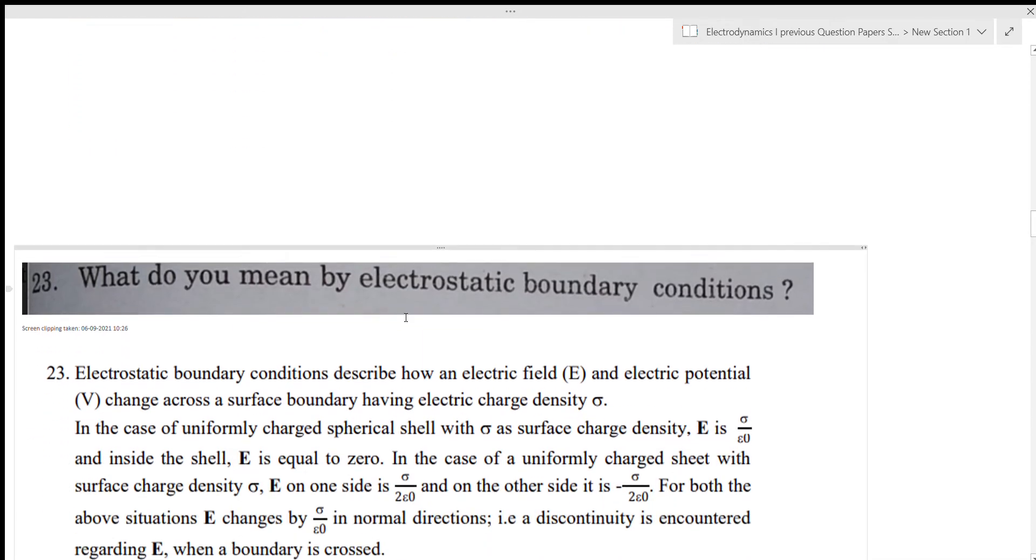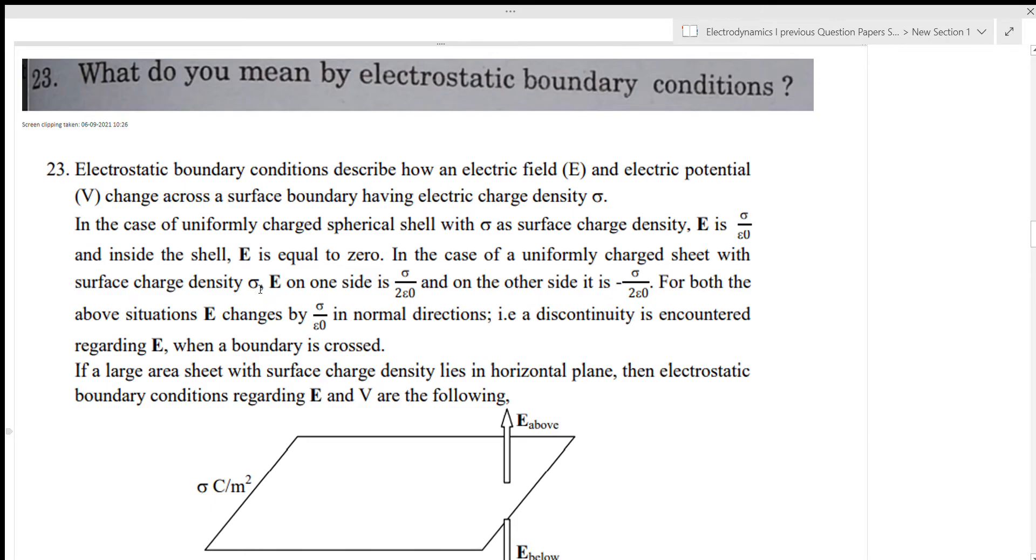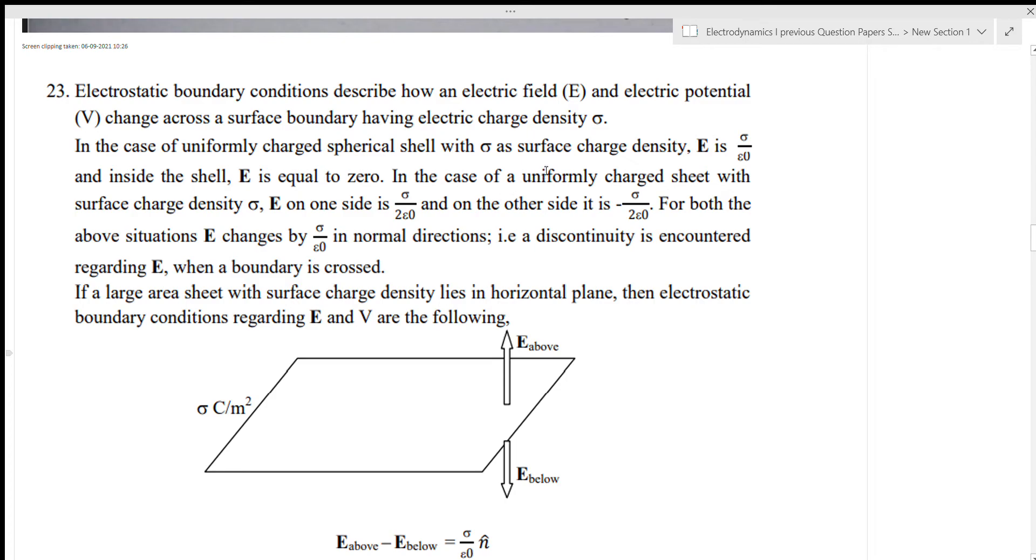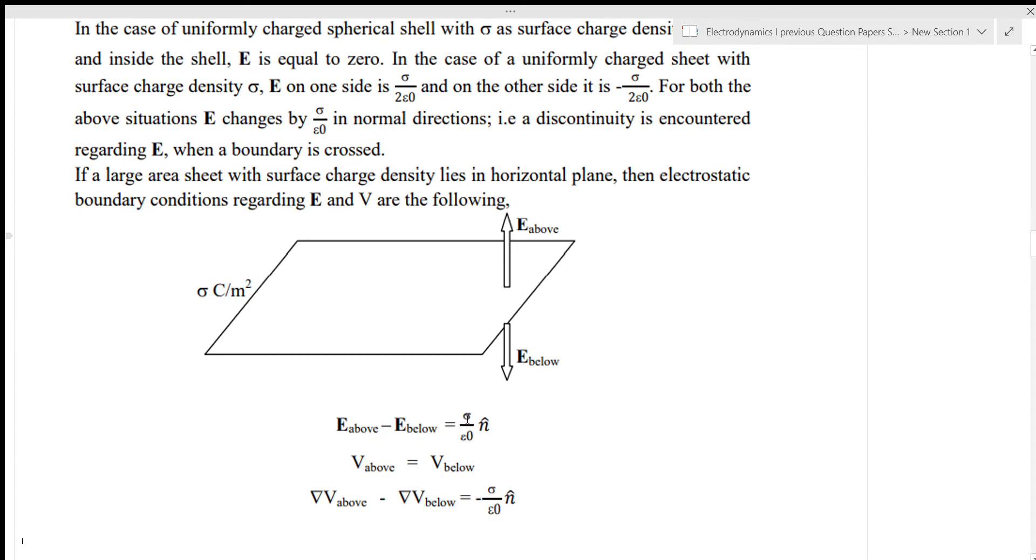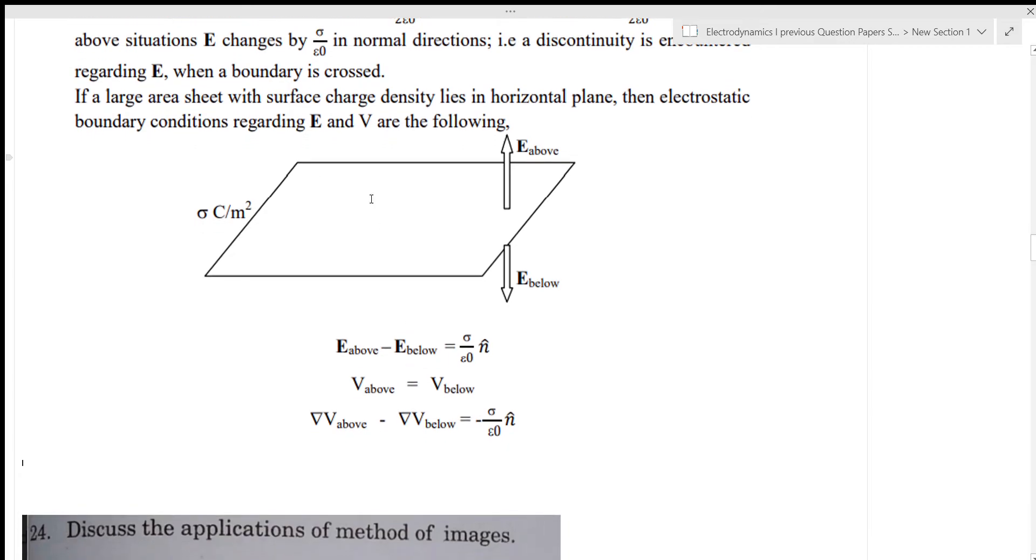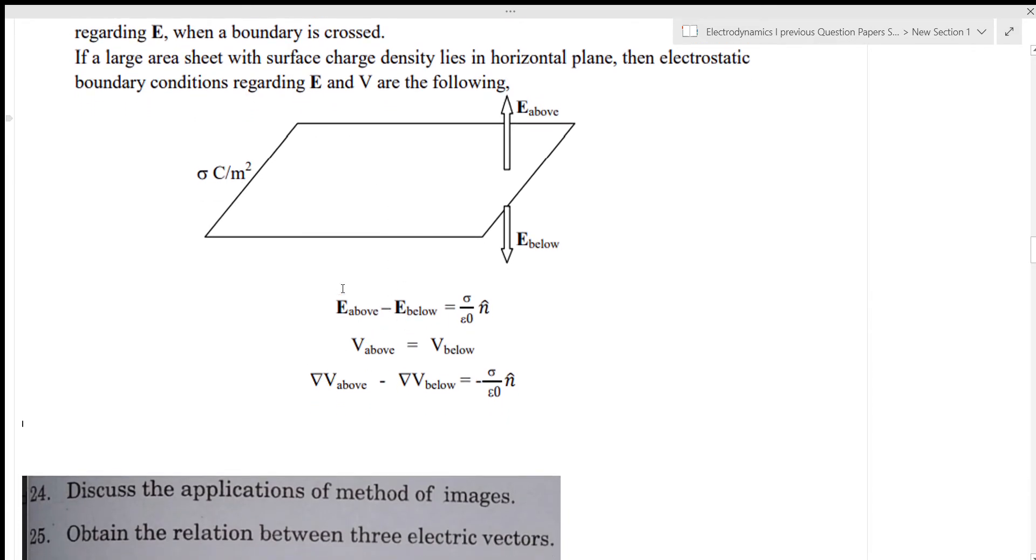What do you mean by Electrostatic Boundary Condition? The boundary condition where E is not continuous. E above and E below. For example, in the case of uniformly charged spherical shell with sigma surface charge density, E is sigma by epsilon zero outside and inside the shell E is equal to zero. Then there is a discontinuity. E above minus E below is sigma by epsilon zero n cap. Similarly, del V by del n is equal to minus sigma by epsilon zero.